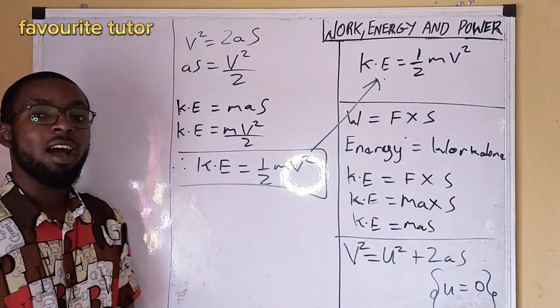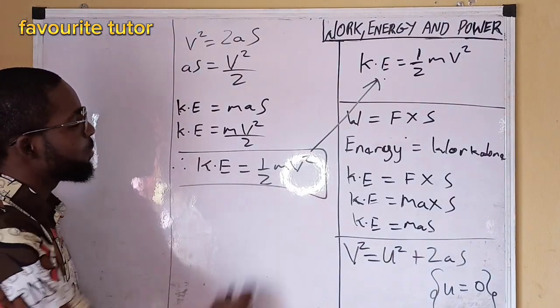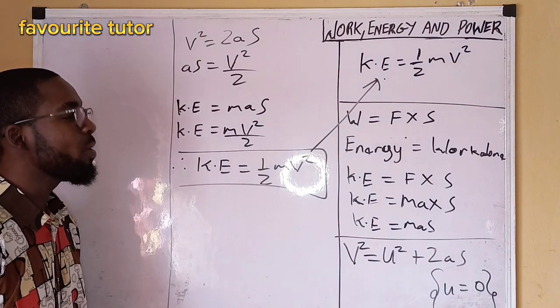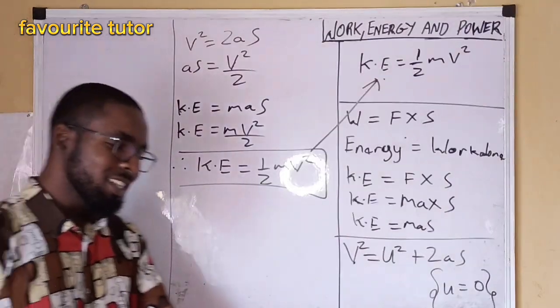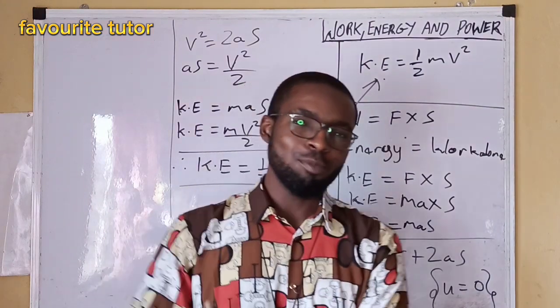So here we are. 1 over 2 mV squared. Kinetic energy is energy possessed by body by virtue of its motion.